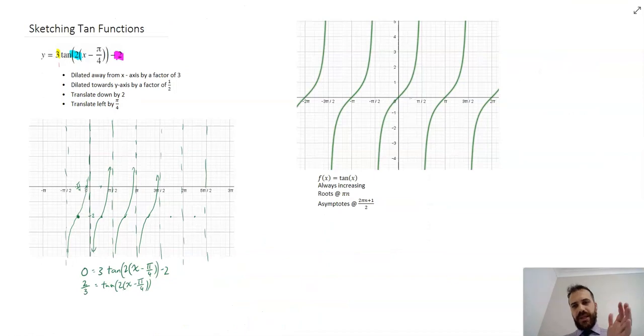A little bit unsatisfying, I suppose, but it's important to understand that when you're sketching a function, it's really just sketching a series of transformations. So as long as you understand what an original tan function looks like, you can then sketch any transformation of that tan function.